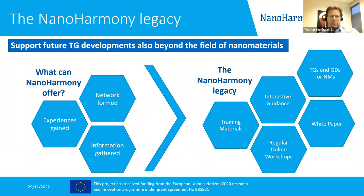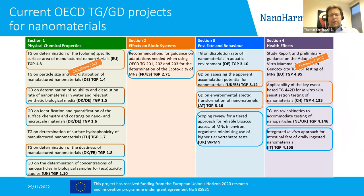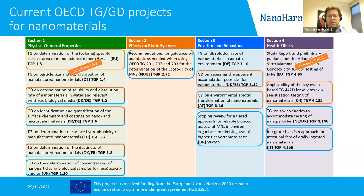This aims for a wider impact of NanoHarmony in the short and medium term. The slide shows ongoing OECD test guideline and guidance document developments related to GoForNano and NanoHarmony. Two have been finalized: the one on volume-specific surface area led by the EU JRC, and a study report on preliminary guidance on adaptation of in vitro mammalian genotoxicity test guidelines for testing of nanomaterials.